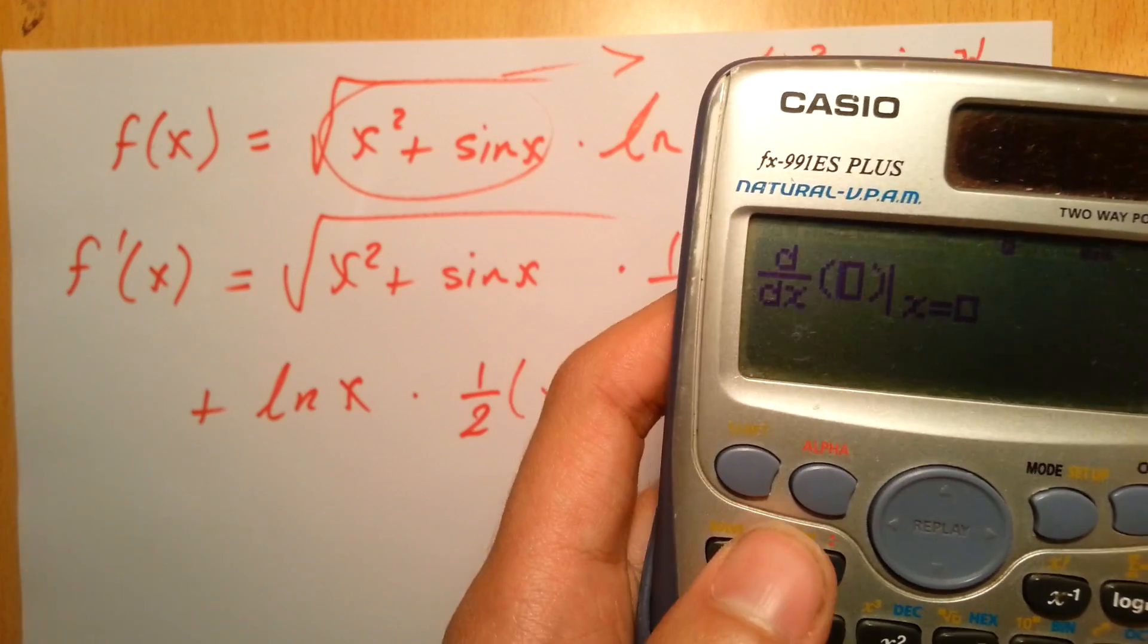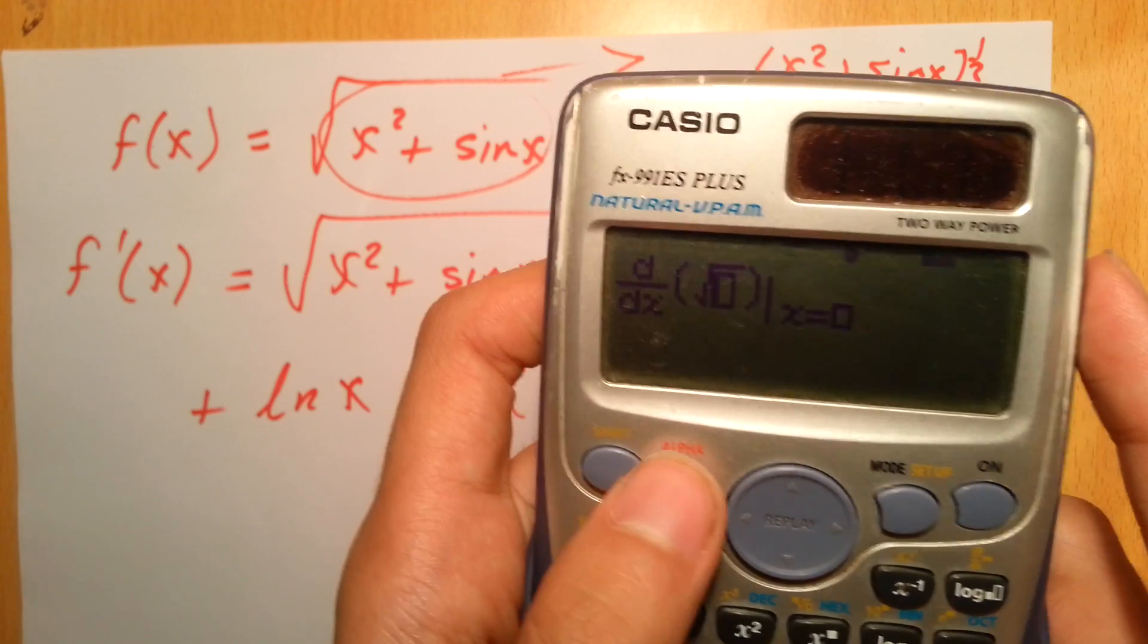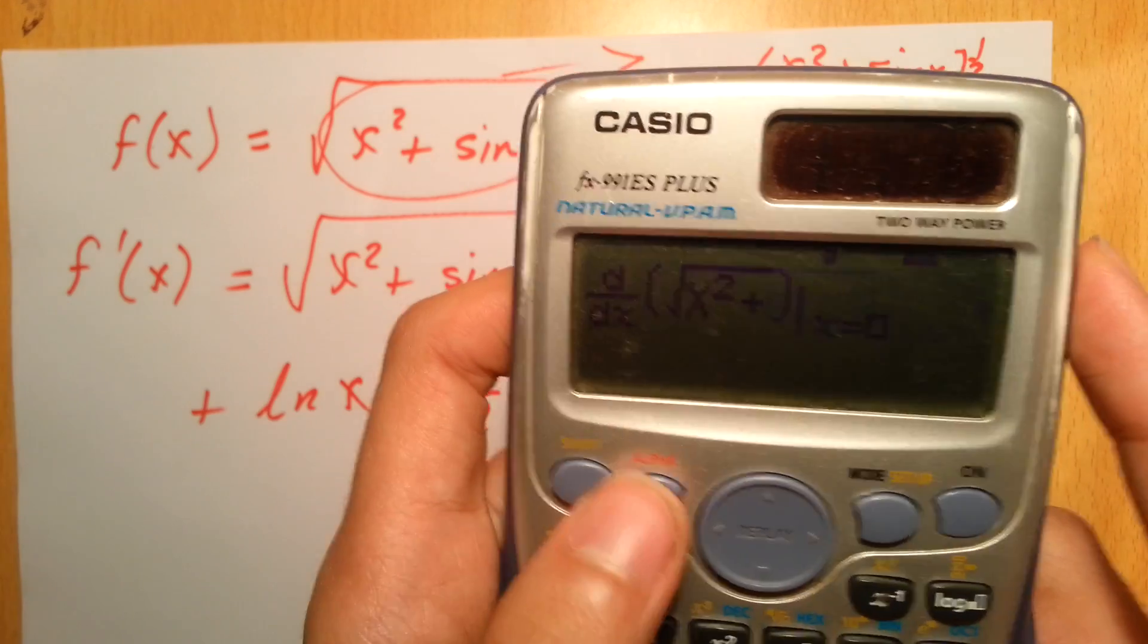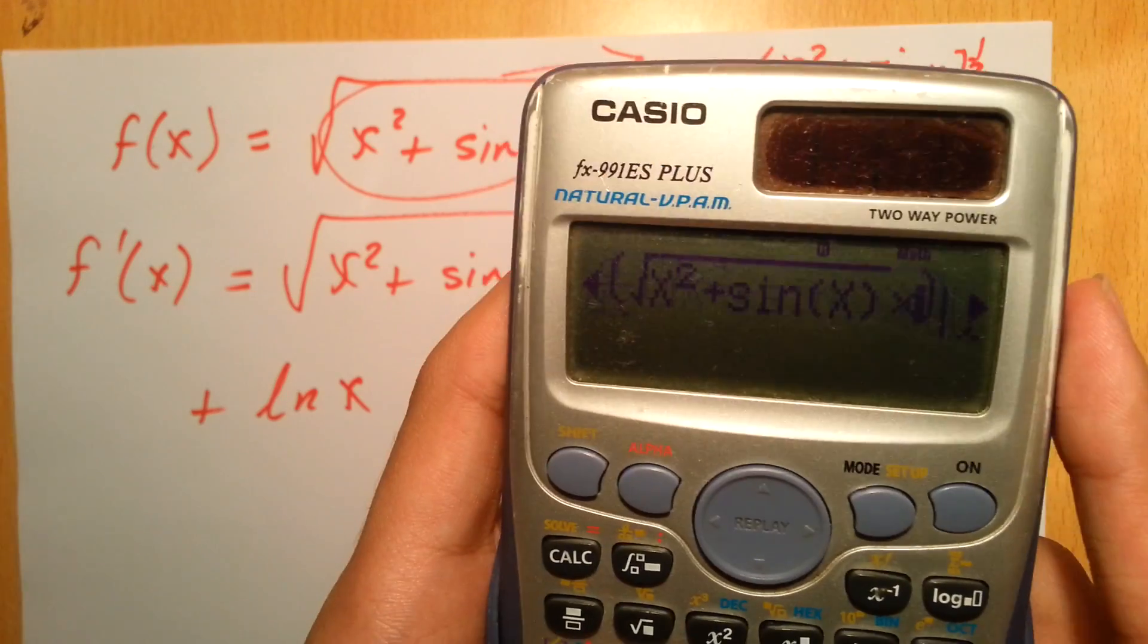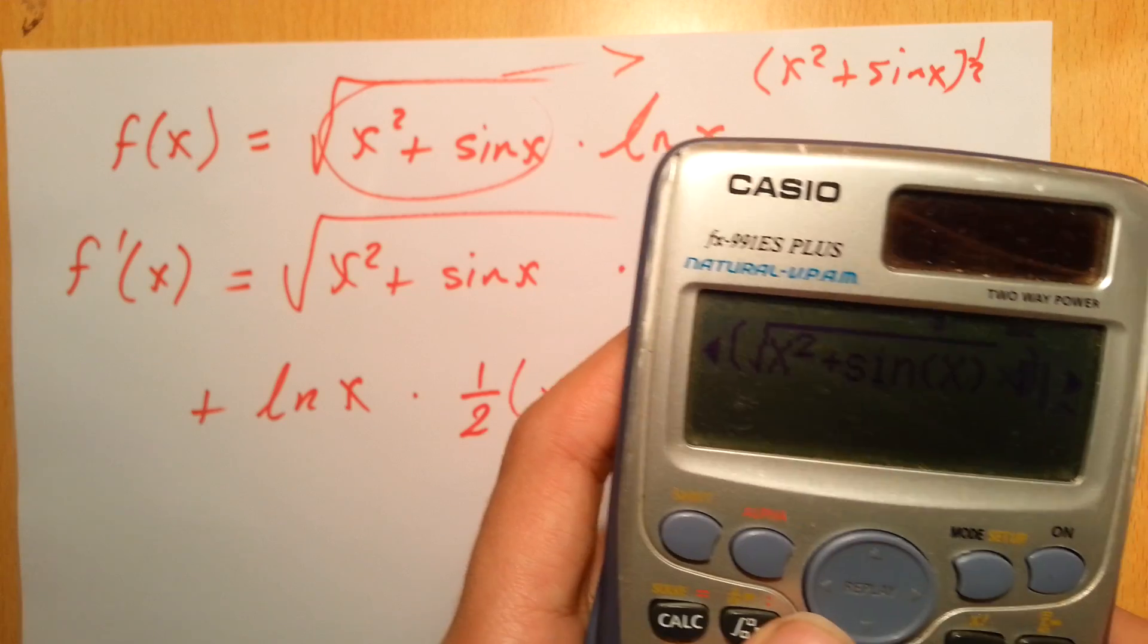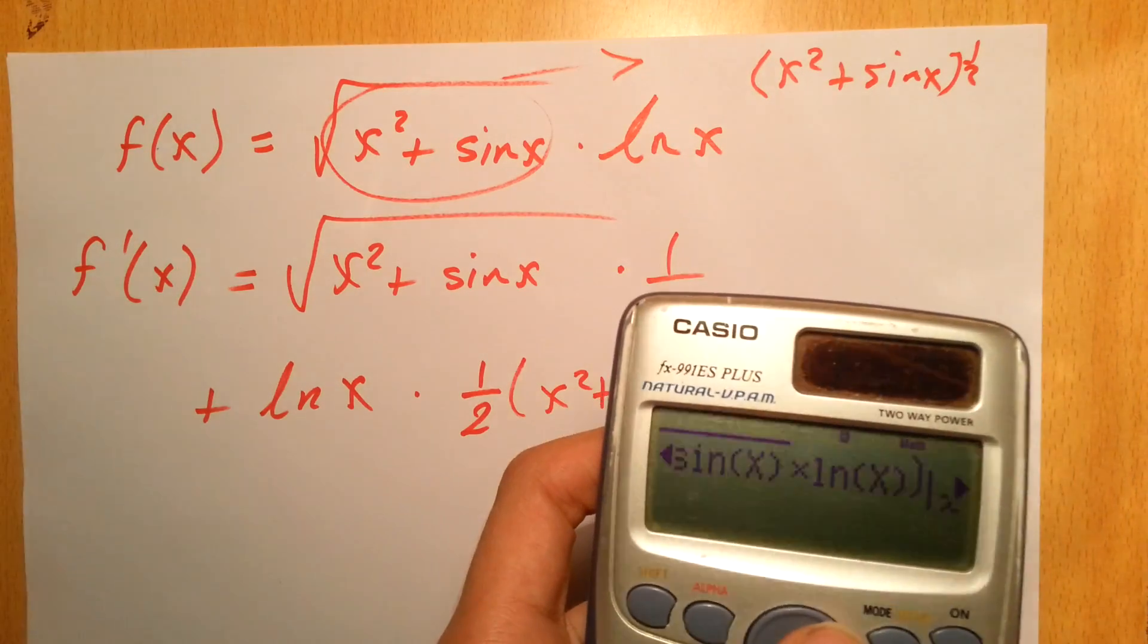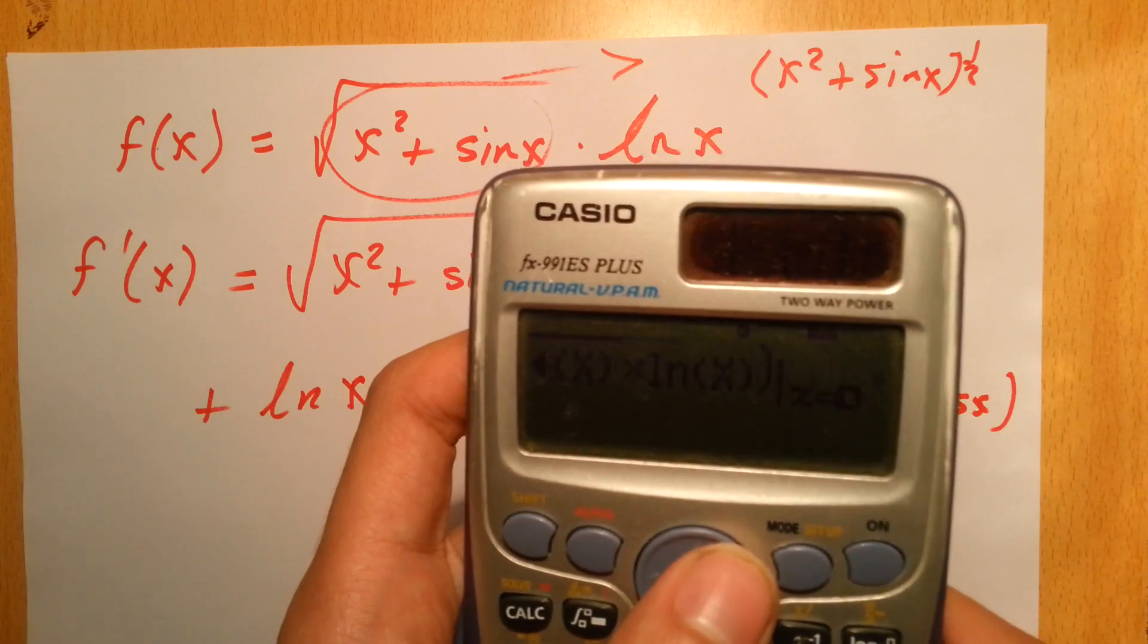Then you plug the function, which is square root of x squared plus sin x, multiplied—you have to be careful with the brackets so that you don't get any wrong answer—ln x. Let's say when x is 5.